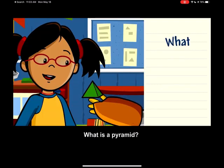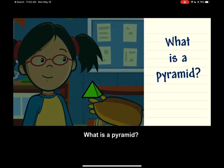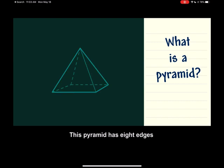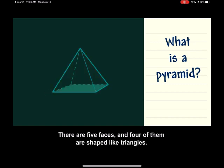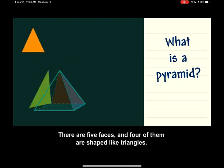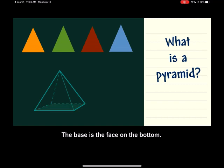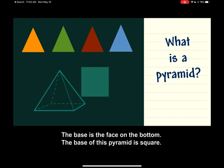What is a pyramid? This pyramid has eight edges, and five vertices or corners. There are five faces, and four of them are shaped like triangles. The base is the face on the bottom.